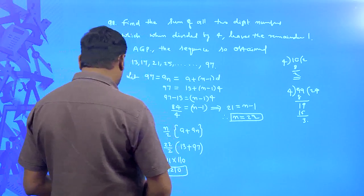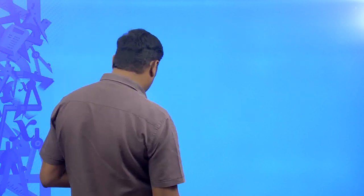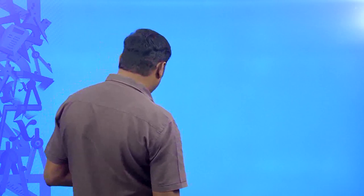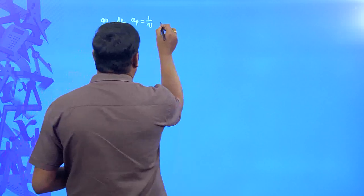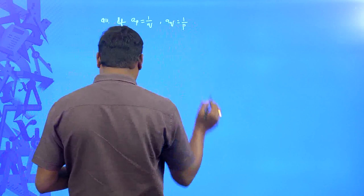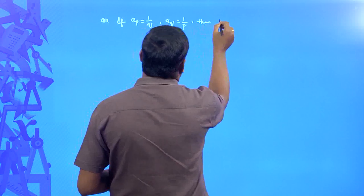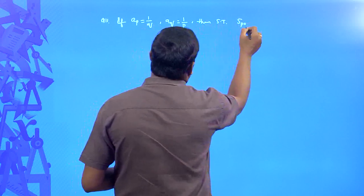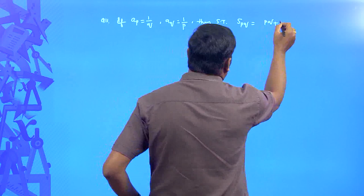Coming to the next problem, let us try to understand a few set of problems which are very important according to our board examination point of view. Those problems are like: if the p-th term of an AP is 1/q and the q-th term is equal to 1/p, then you need to show that the sum of the first pq terms is equal to (pq + 1) / 2.